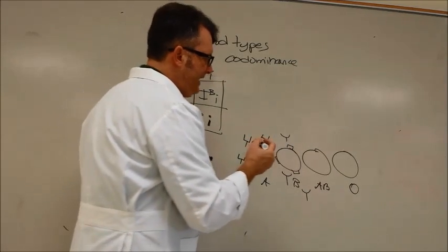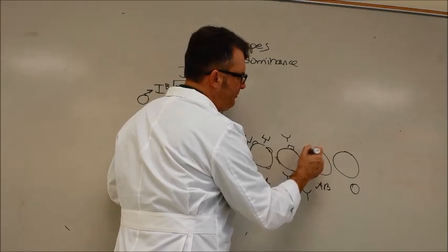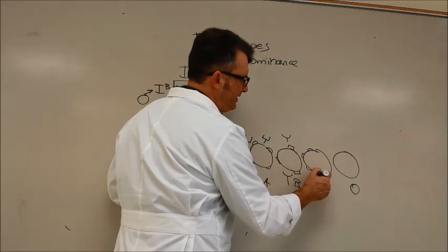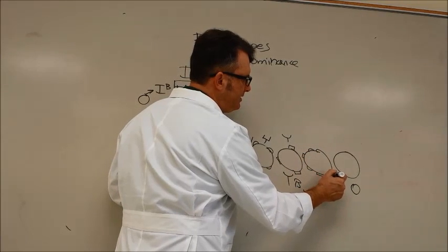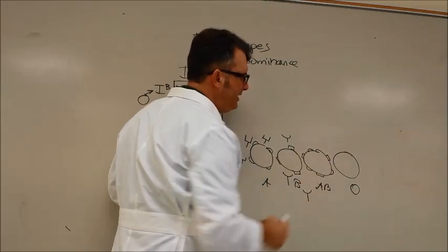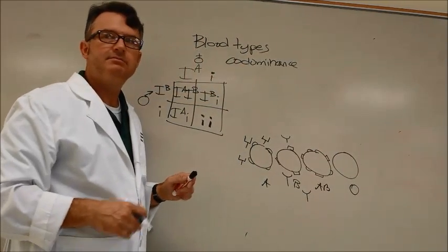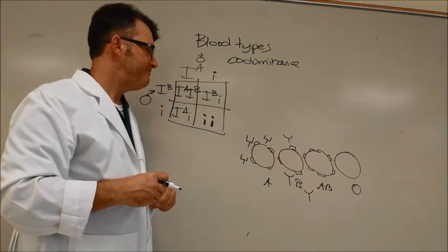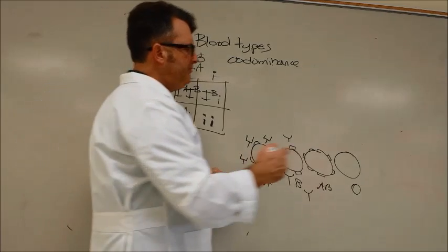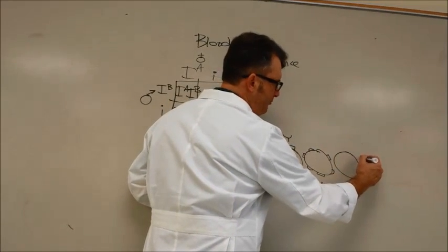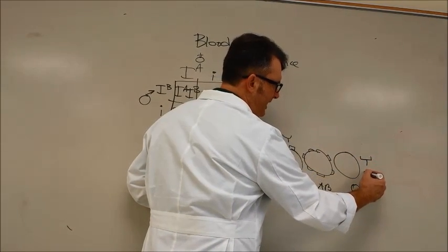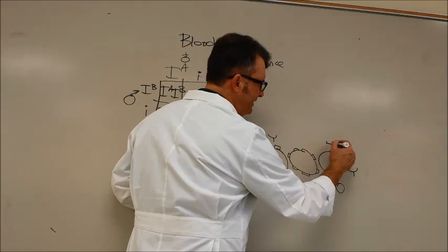Type AB has markers for A blood and B blood like this, but no antibodies. And type O has anti-B and anti-A antibodies.